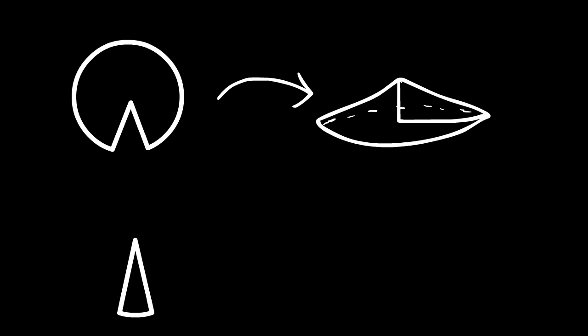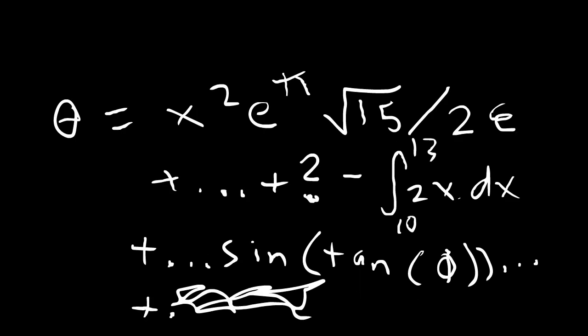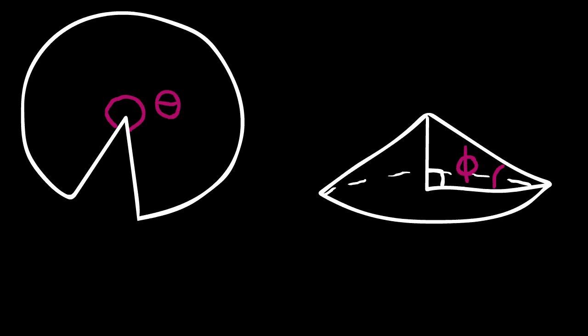The way that I generally made cones was that I took a sector of a circle and connected the two edges that formed. It should be intuitive that if the sector is large, then the cone isn't very steep. And if the sector is small, then the cone should be very steep. But trying to find an exact formula that matched the angle of a given sector with the angle of elevation for the cone that is formed wasn't something that I initially knew.